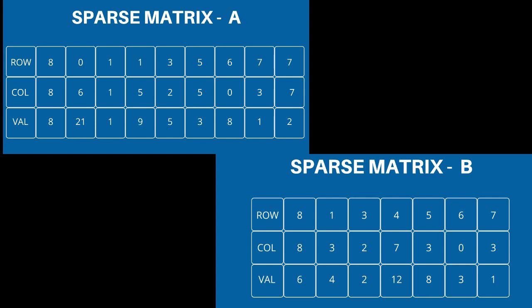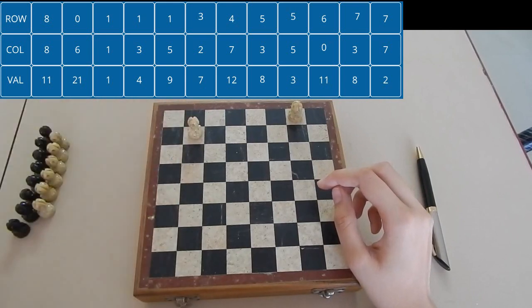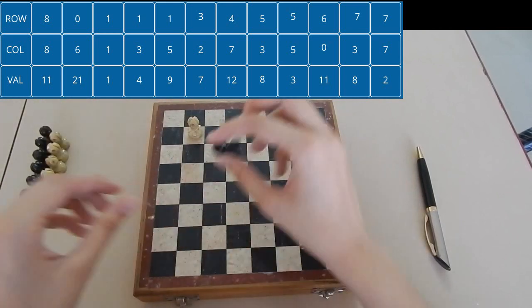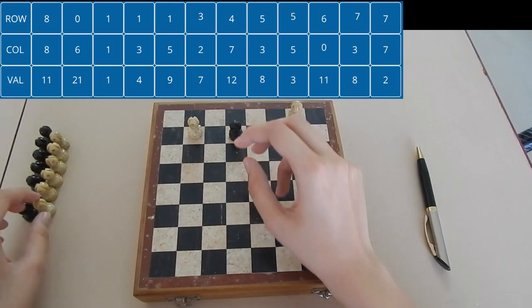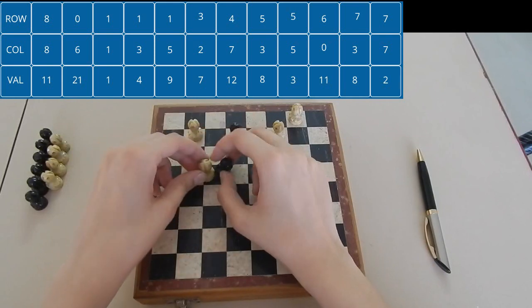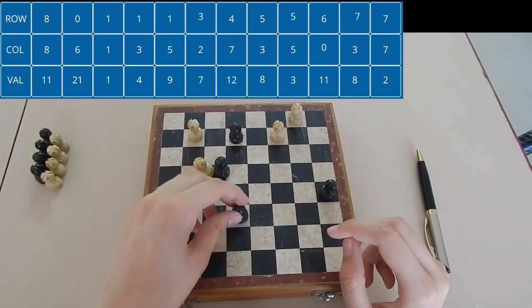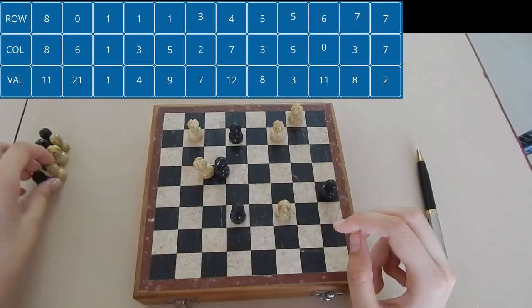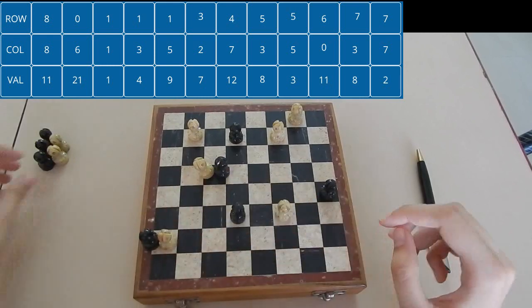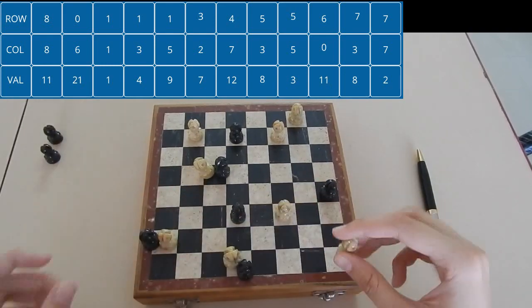Now, sum matrix sparse representation. Row, column, value: 0, 6, 21; 1, 1, 1; 1, 3, 4; 1, 5, 9; 3, 2, 7; 4, 7, 12; 5, 3, 7; 5, 5, 5; 6, 0, 11; 7, 3, 8; 7, 7, 2.